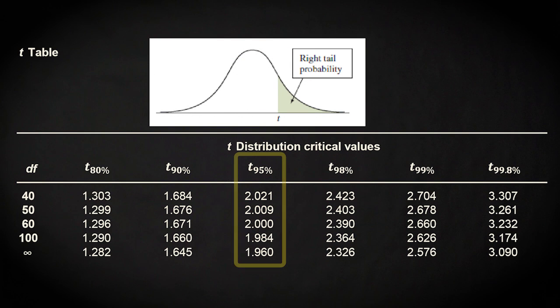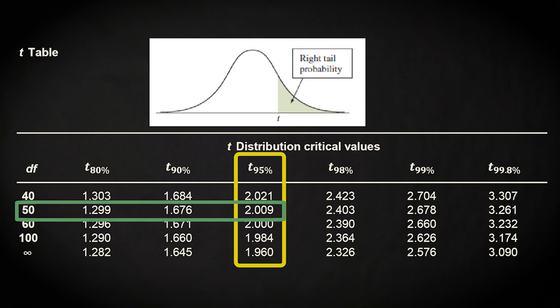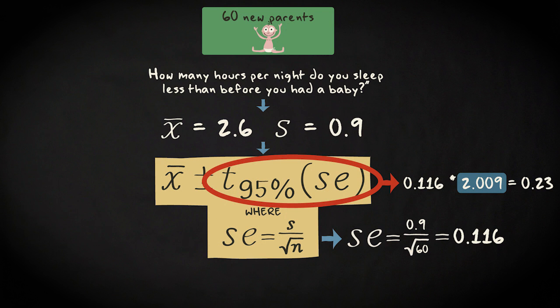In our t-table, we look in the column of the 95% confidence level and in the row of 59 degrees of freedom. Because the table does not report 59 degrees of freedom, we settle for the closest lower value — that's 50 degrees of freedom. The relevant t-score is 2.009. So we multiply 0.116 by 2.009, which is about 0.23.